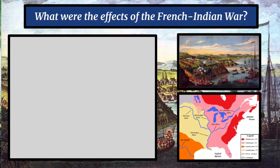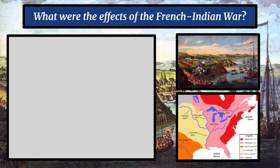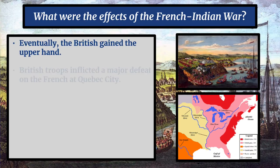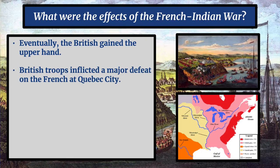Our next left-side question is: what were the effects of the French-Indian War? Eventually, the British gained the upper hand after losing many early battles. They had the better-trained army and inflicted a major defeat on the French in Quebec City, which is part of modern-day Canada. The British climbed up the cliffs onto the Plains of Abraham, along the St. Lawrence River, gained the upper ground, and defeated the French in what is now the capital of the Canadian province of Quebec.